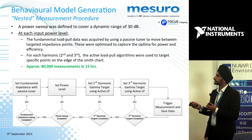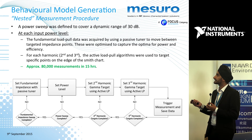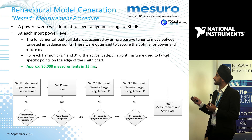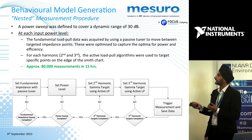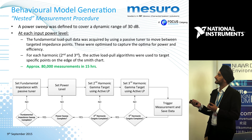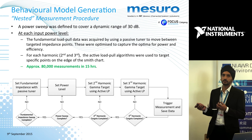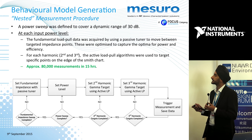I started with the fundamental impedance set with the passive tuner. I would then set a power level — this was a 30 dB power sweep — then set a second harmonic gamma target. For each of those, I have a full family of third harmonic gamma targets. Then you trigger your measurement, finish this loop, and go to the next point in the second harmonic and so on. All together that yielded 80,000 measurements and it took us 15 hours with the traditional VNA-based system.